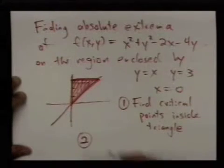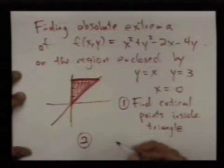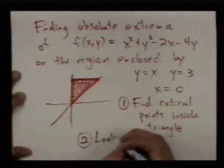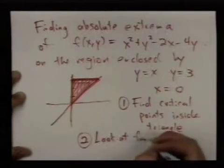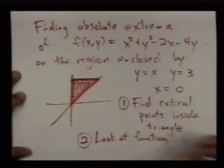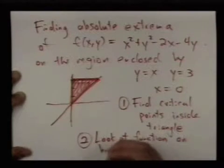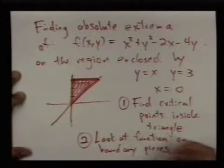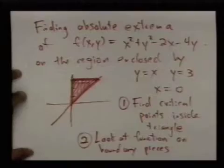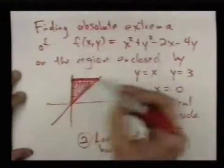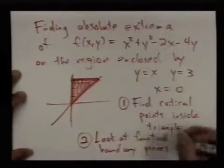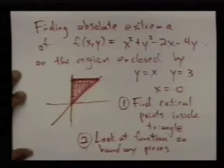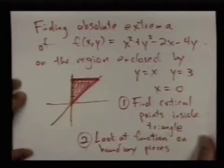The second step is to look at the values of the function on the boundary pieces. We can apply one variable calculus techniques to each of those pieces. There'll be more complicated examples later on where this step will involve Lagrange multipliers, but for this, we won't need that.